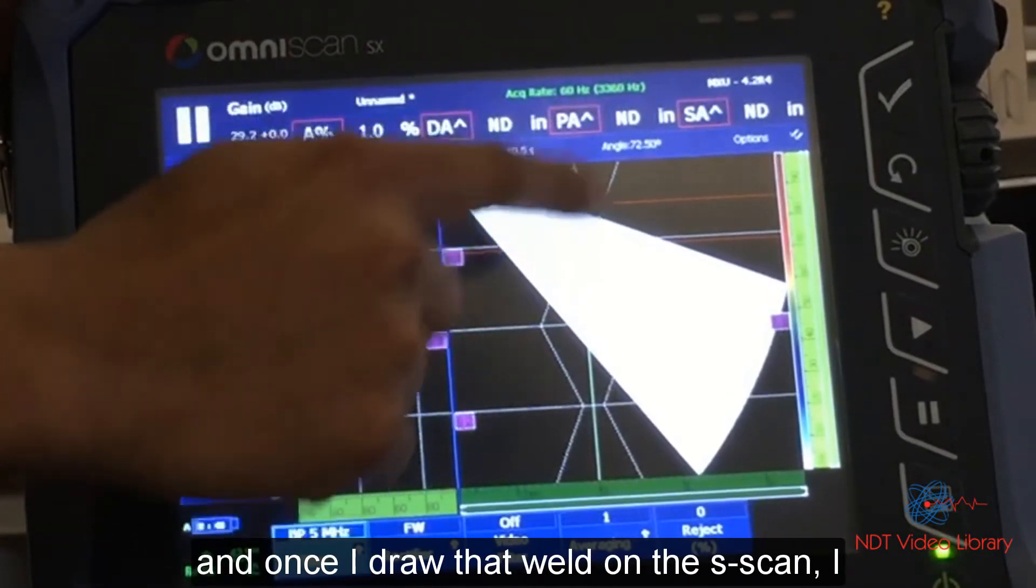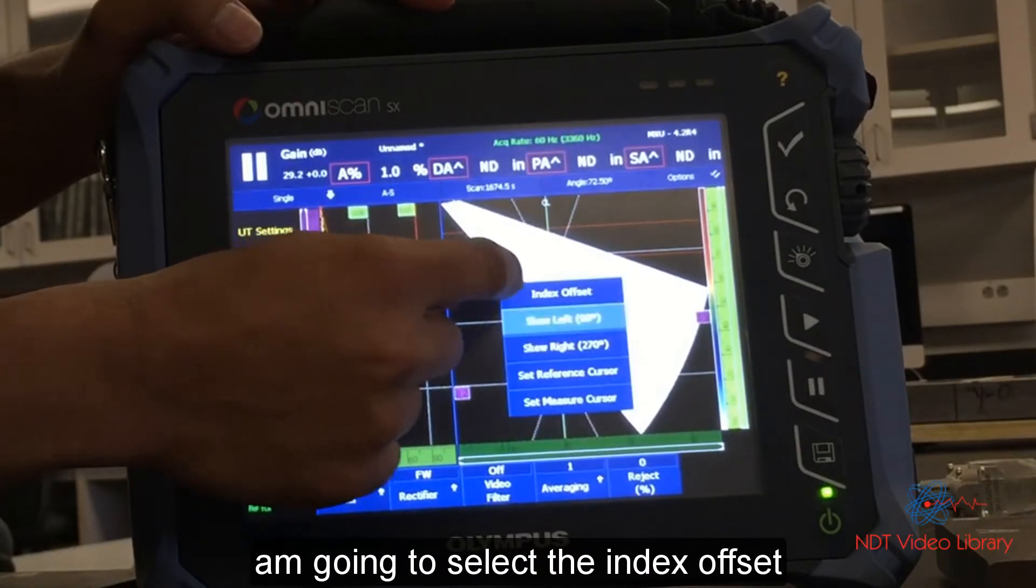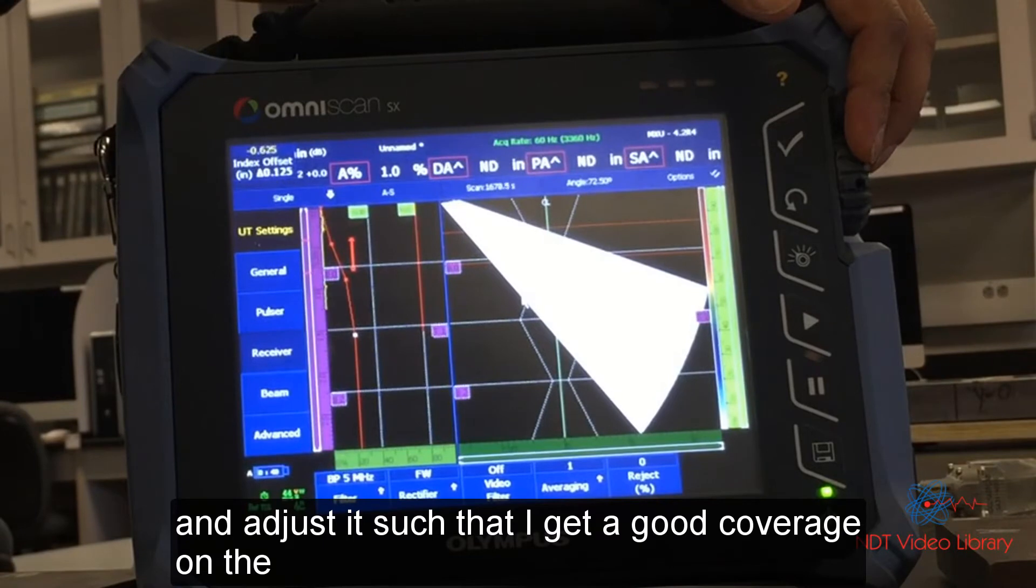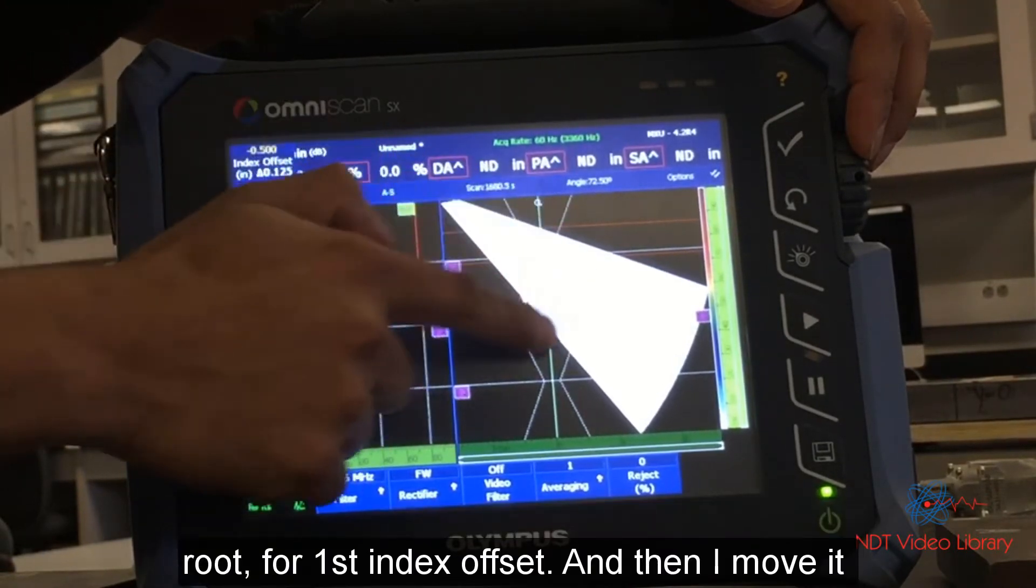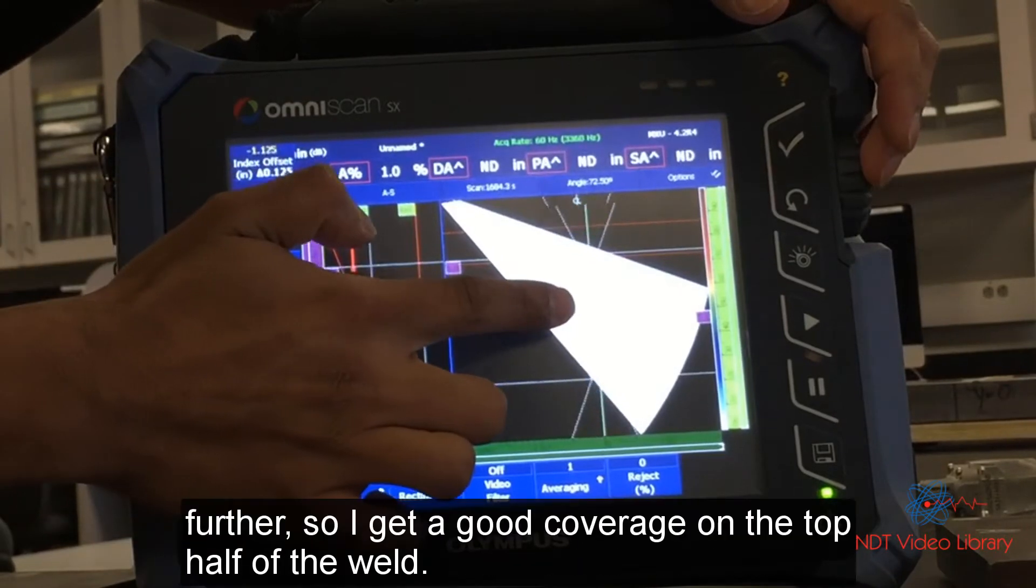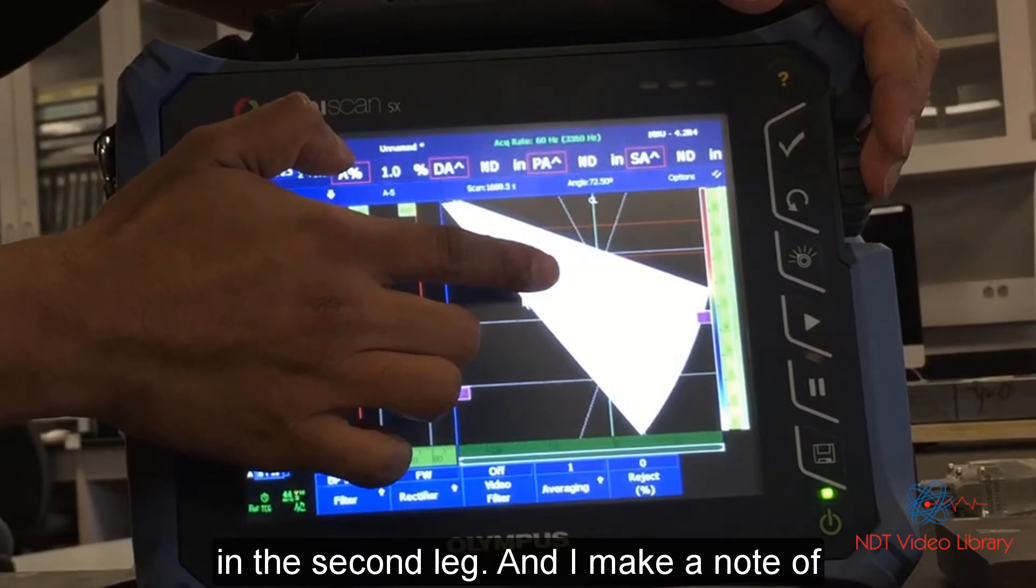Once I draw that weld on the S scan, I'm going to select the index offset and adjust it such that I get a good coverage on the root for first index offset. And then I move it further so I get a good coverage on the top half of the weld in the second leg.